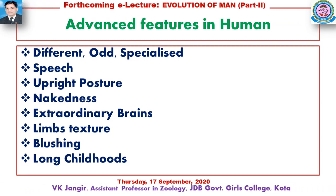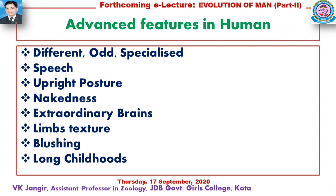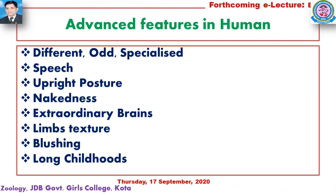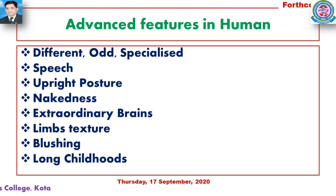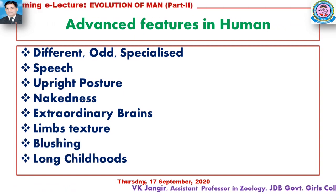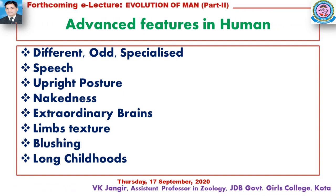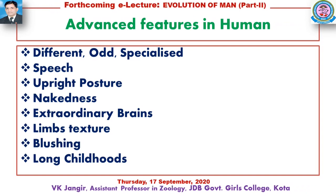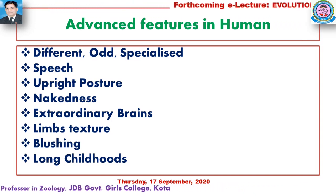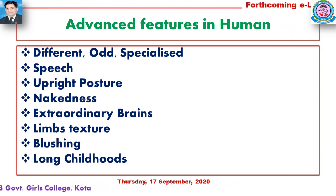Regarding limb structure, human hands differ from those of other primates. Additionally, facial expression and behavior are distinctive features of humans compared to other primates.